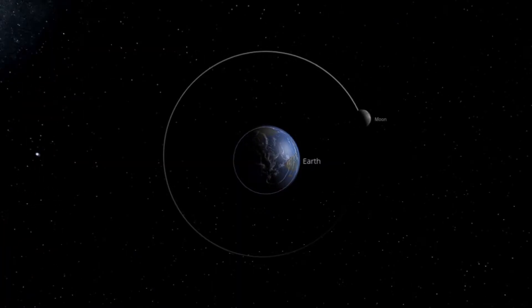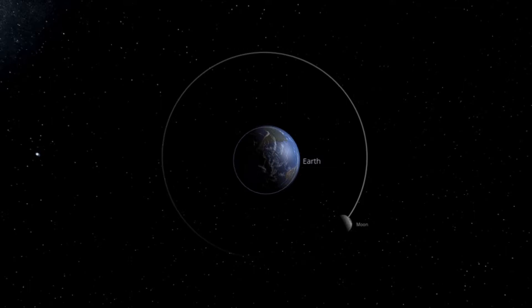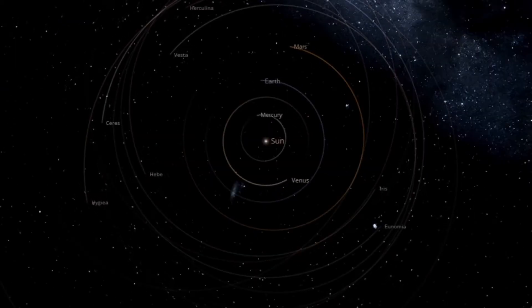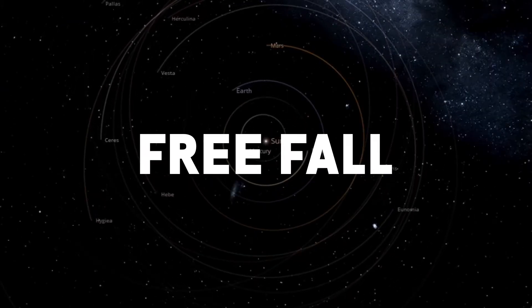The Moon is revolving around the Earth and thus it is also in a free fall. All the planets and the asteroids are doing a free fall on the Sun.